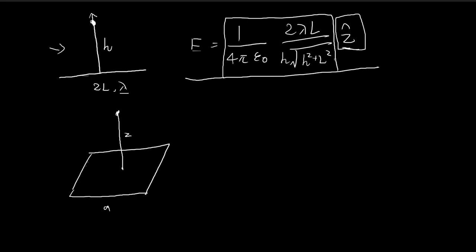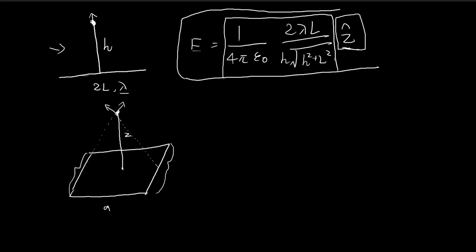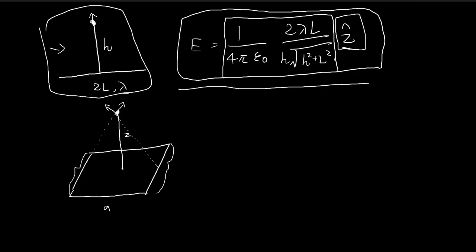Each of these line charges is going to contribute an amount of electric field. The contribution from this side points in this direction, the contribution from this side points in this direction, and the same for the other two sides — they point in other directions. But essentially, each one of these arrows is given by this expression. So to find the total electric field at this point, we just need to combine 4 arrows from these 4 line charges. This is just a combination of 4 cases of this example, so we apply this formula and multiply by 4.